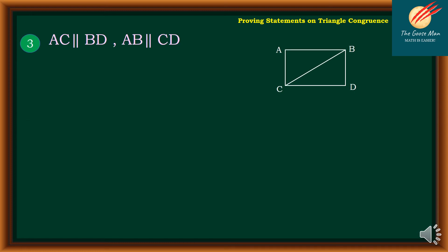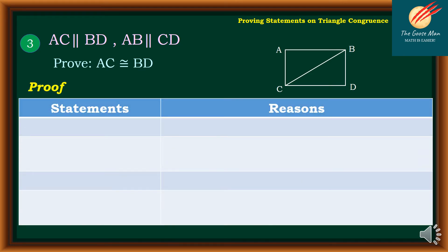Let's move on to example number three. Given: AC is parallel to BD, and AB is parallel to CD. We need to prove that AC is congruent to BD. For statement number one: AC is parallel to BD — let's mark that with the parallel symbol — reason: given.